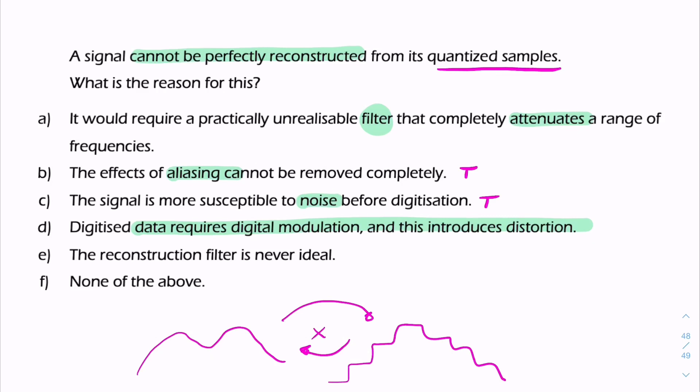The reconstruction filter is never ideal. Well, that isn't an explanation. We're saying here that even in theory, a signal cannot be perfectly reconstructed. So even if there were such a thing as an ideal reconstruction filter, it wouldn't be possible. It's not about theory and practice, because even in theory, it's not possible to reconstruct a quantized signal.